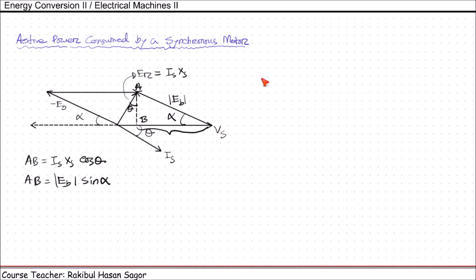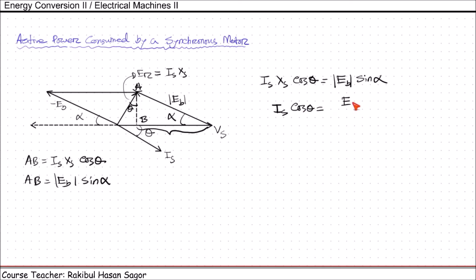By equating these two equations, we can say Is·cos theta equals to Eb·sin alpha divided by Xs. That means Is·cos theta equals to (Eb / Xs)·sin alpha. We are considering magnitudes only.